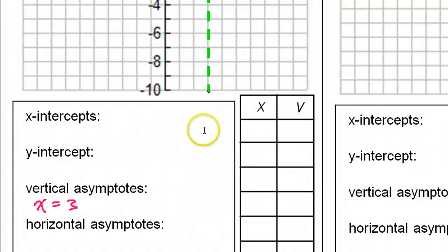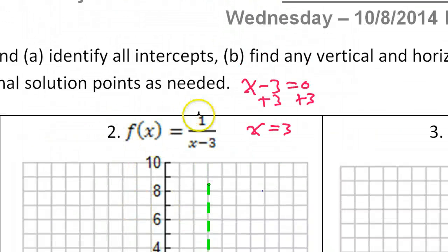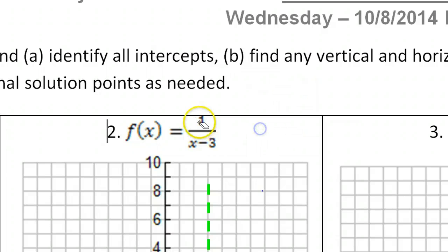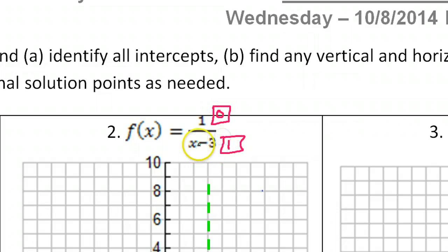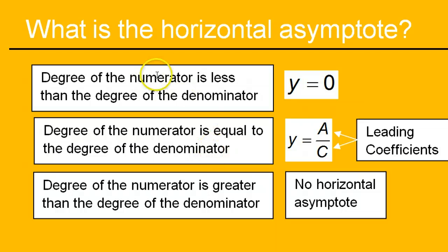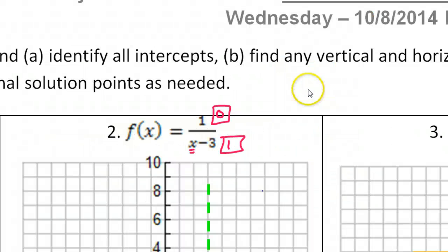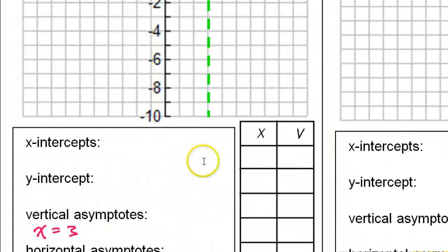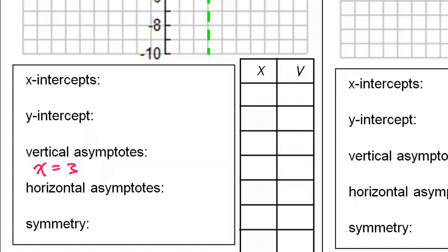So in this case, looking at the degree: the degree of the numerator is zero because there are no x's in the numerator. The degree of the denominator is one because there is one x. So the degree of the numerator is less. And we just saw that if the degree of the numerator is less, then y equals zero is the asymptote every time. So that tells us that the horizontal asymptote is y equals zero.